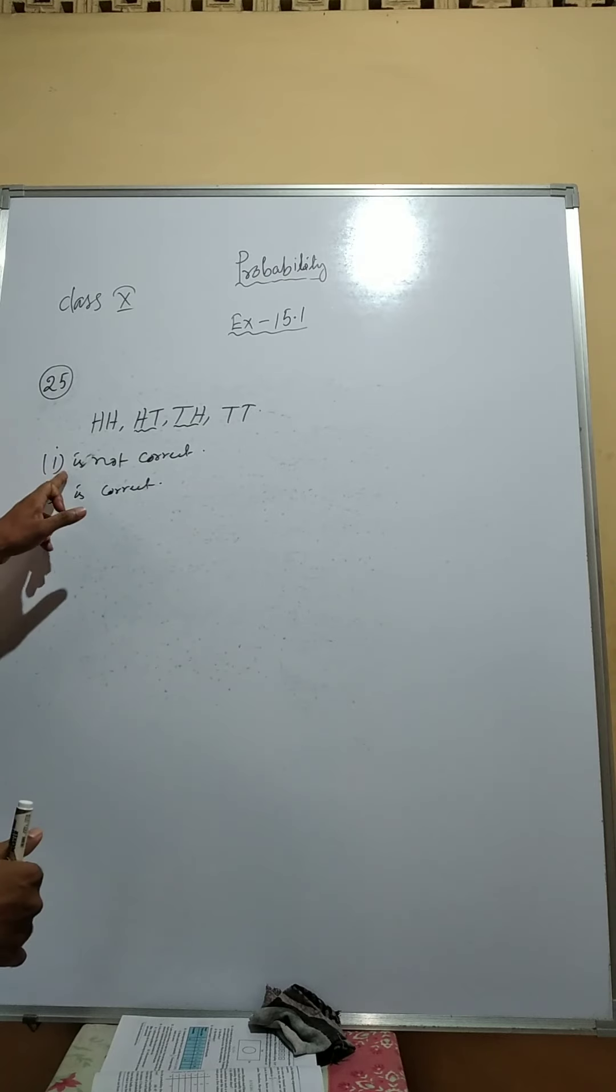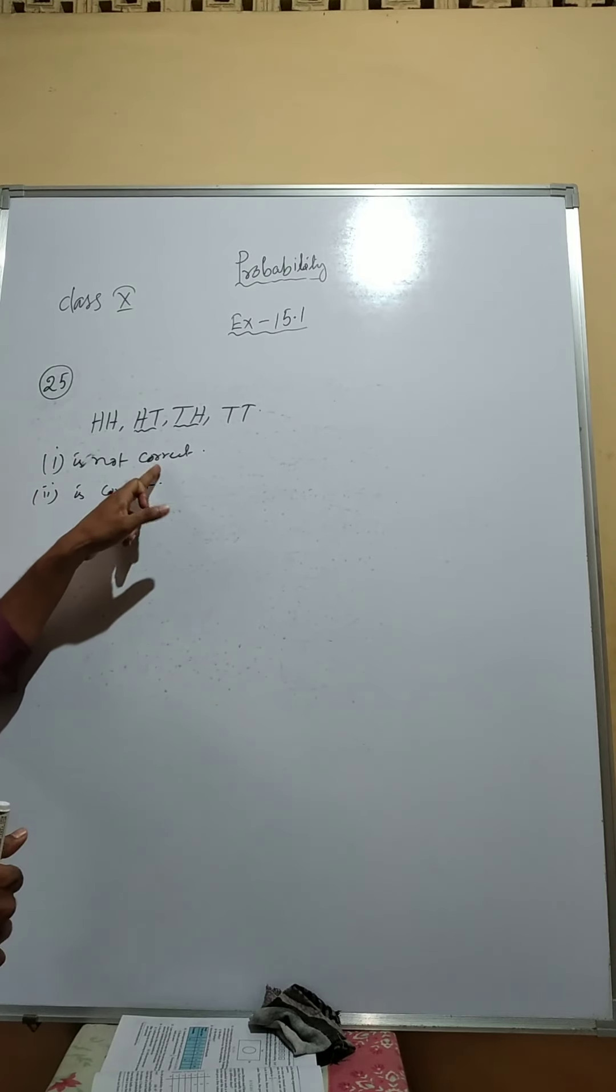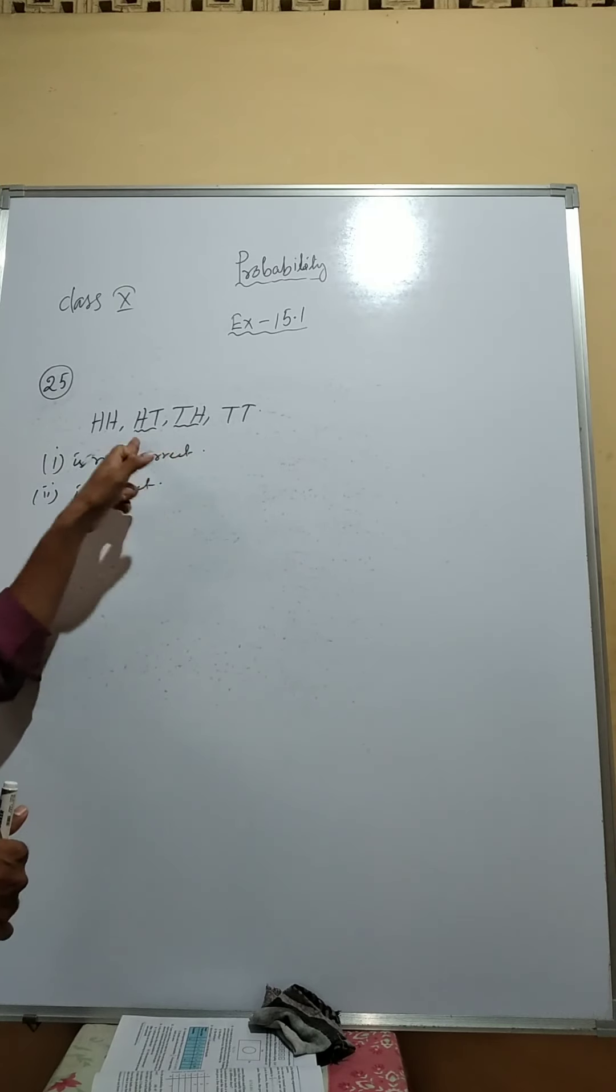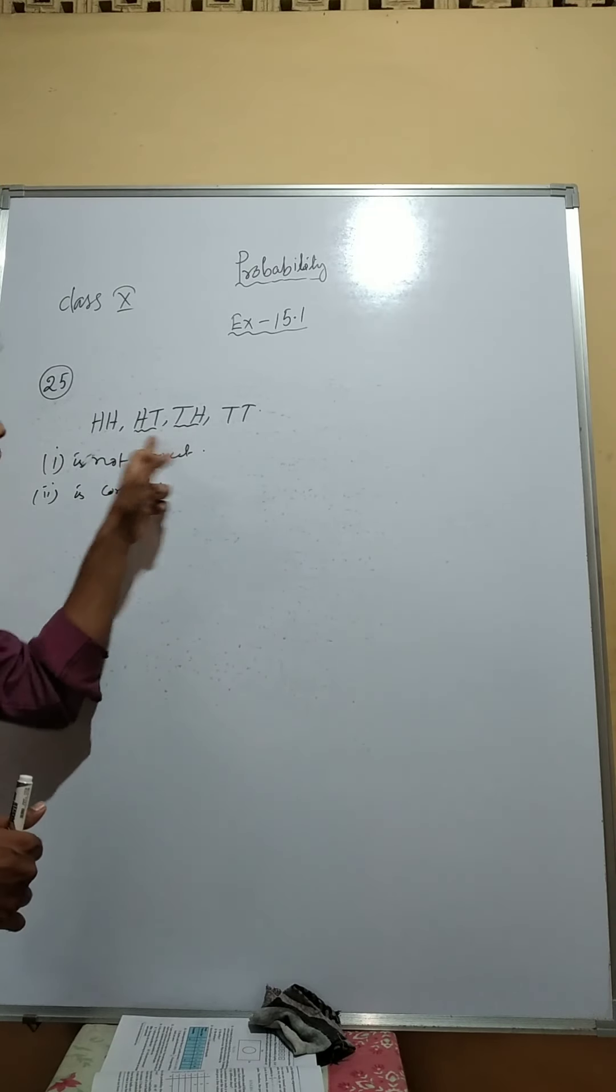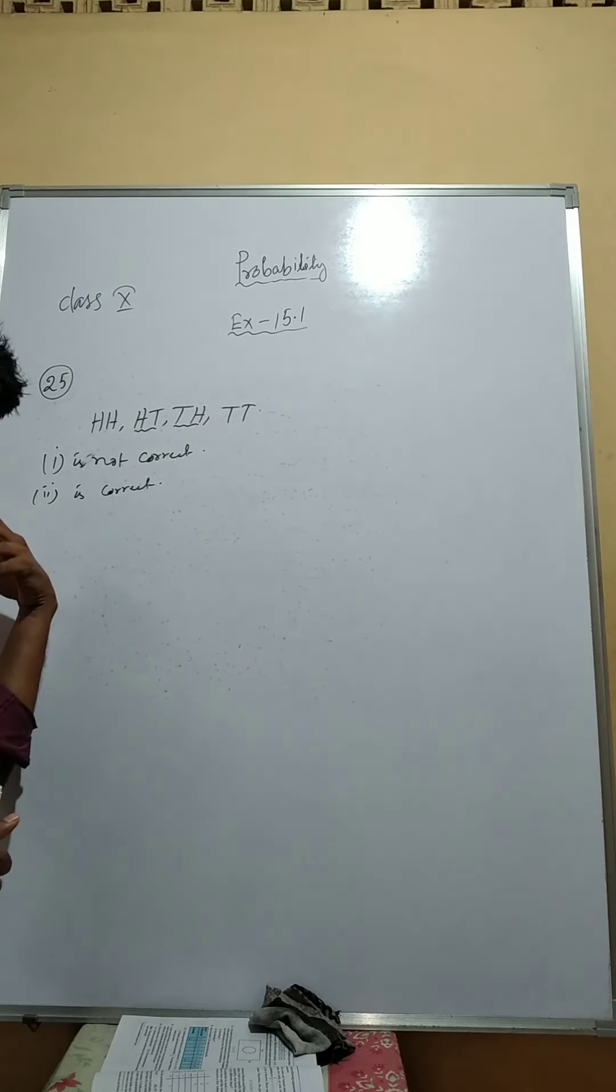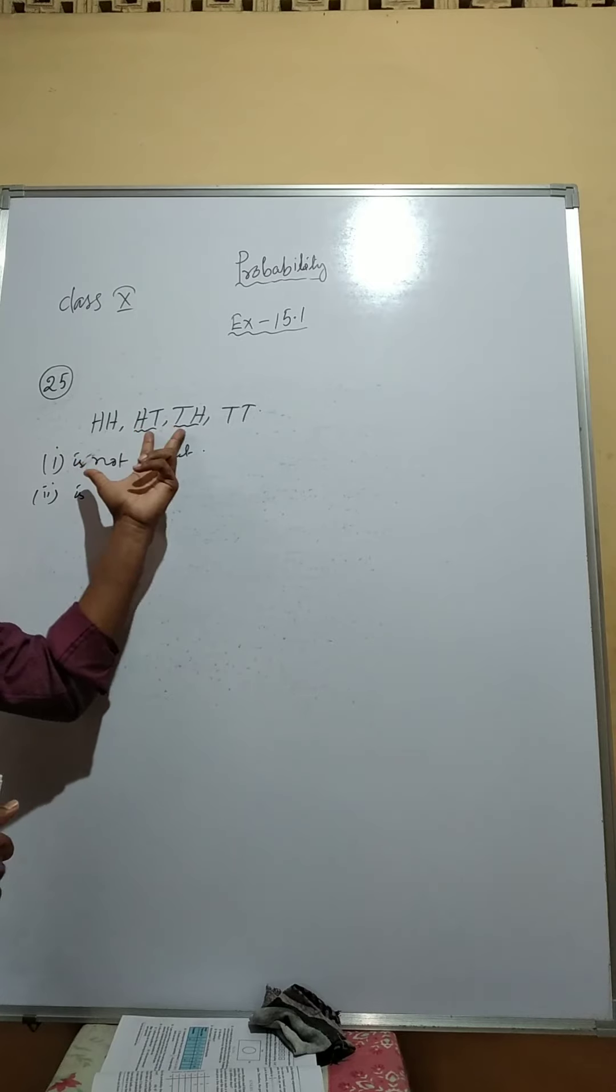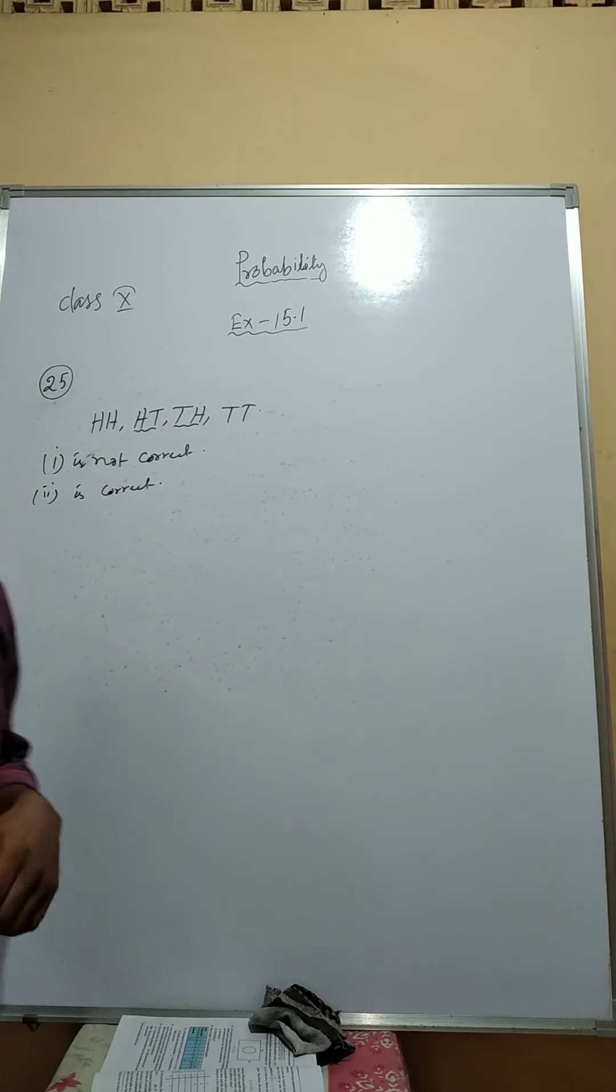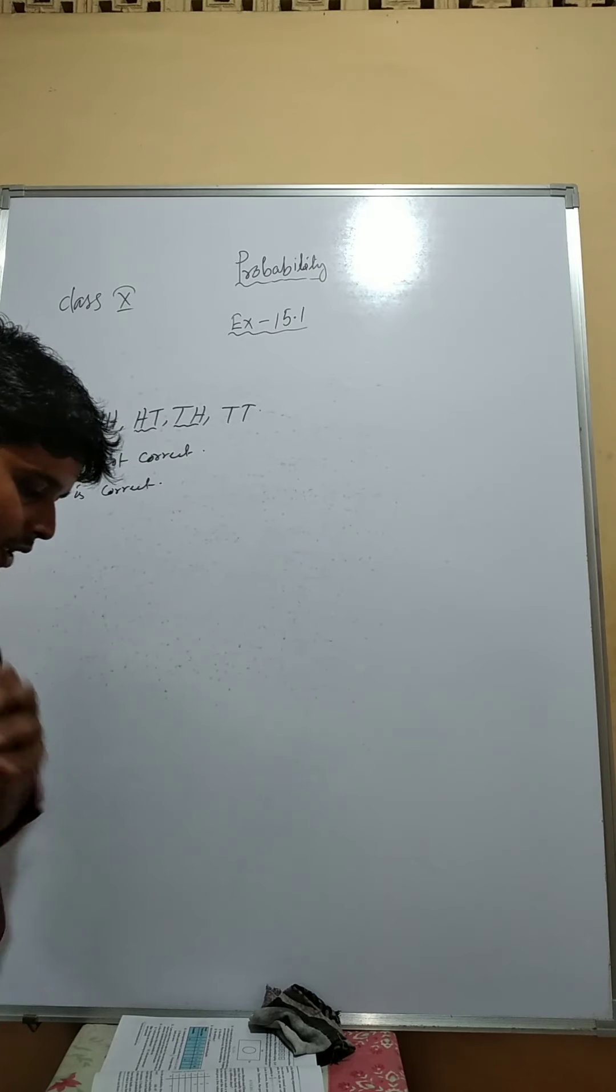In option 1, just you have to give the reason why it is not correct. Because the main result is this: they are not equally likely. If they were equally likely, then the probability 1 by 3 is ok. But these are not equally likely outcomes. That is why Roman 1 is not correct. It is incorrect.